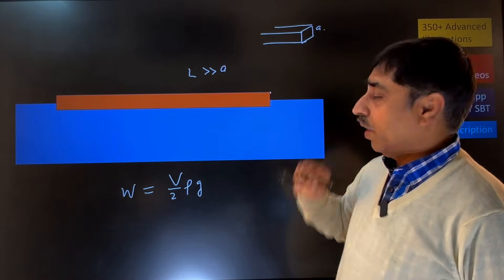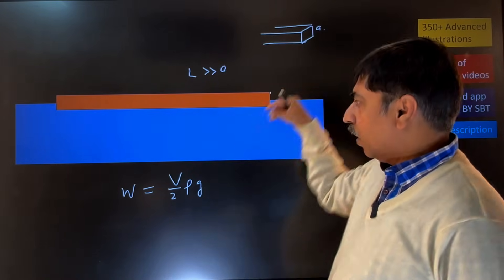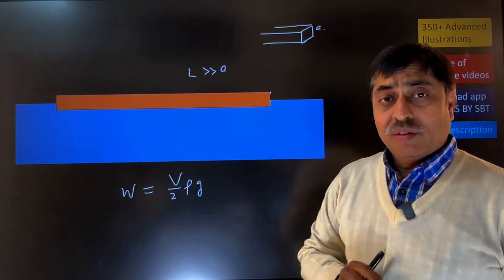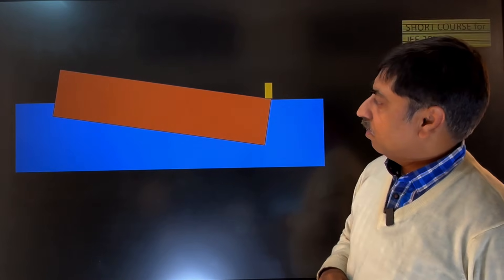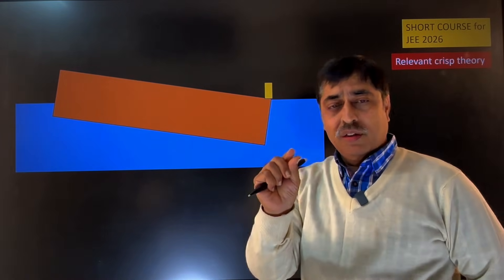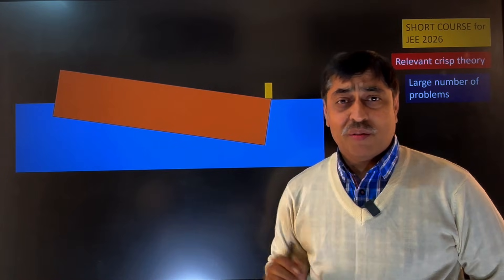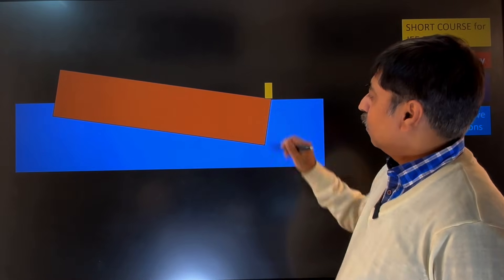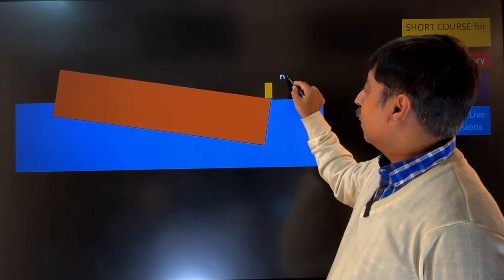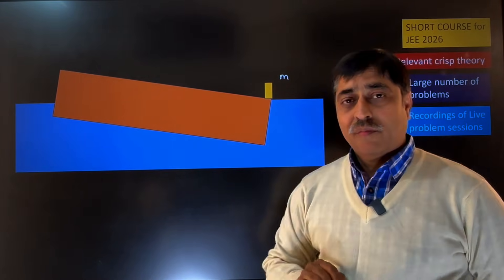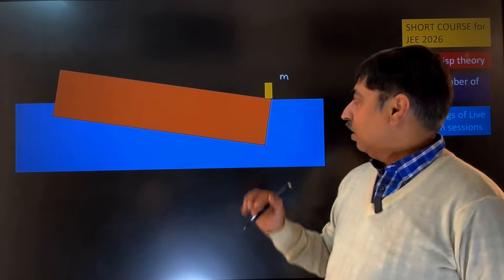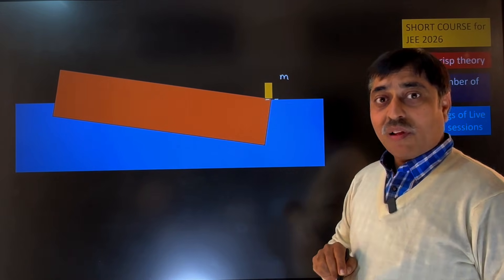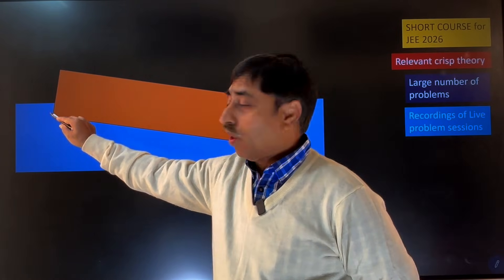Now the question says that you put a small weight over here — assume that a bird or insect comes and sits here. So this bar gets tilted. This is the small object; its size is small, though its weight may be comparable to the mass of the bar. So, a small object of mass m has been placed at one end, and because of this the bar tilts. The upper level of the bar at this edge is just at the water surface.